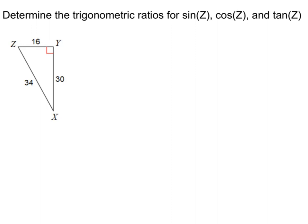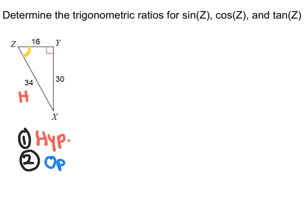For this example, it's asking for sine of Z, cosine of Z, and tangent of Z. So all three of these are using Z as the reference angle. If I label the sides, I have the hypotenuse, which in this case is 34, the opposite, which in this case is the 30, and the adjacent, which in this case is the 16. And we know our relationship is SOH-CAH-TOA.